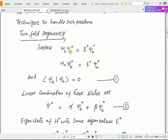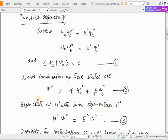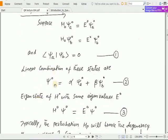Here the two different states ψ_a and ψ_b yields the same energy level E^0. We consider the inner product of these two states ⟨ψ_a|ψ_b⟩ equals 0. Then the linear combination of these states is of the form ψ^0 = α ψ_a^0 + β ψ_b^0.